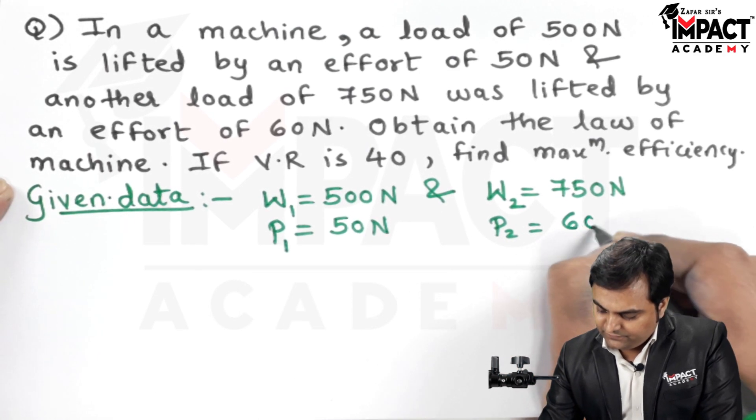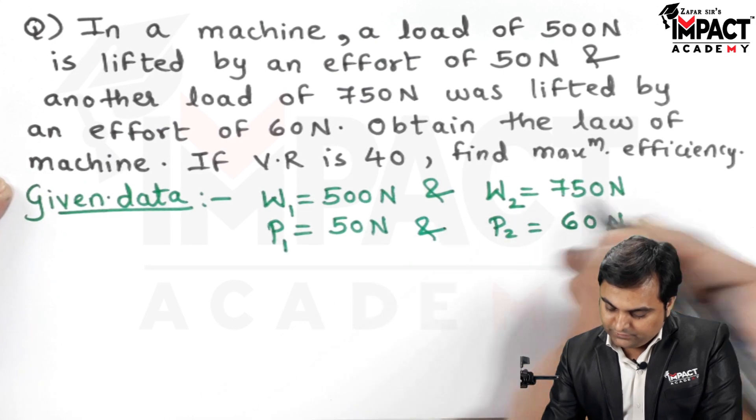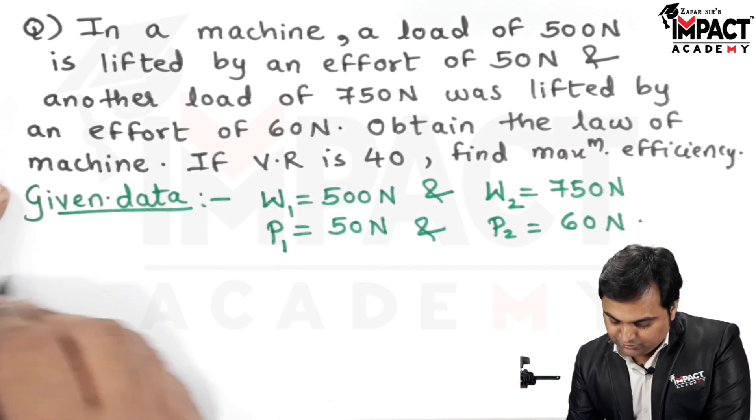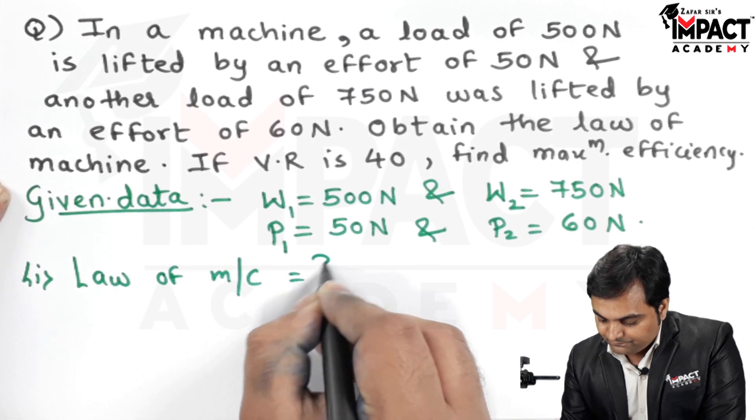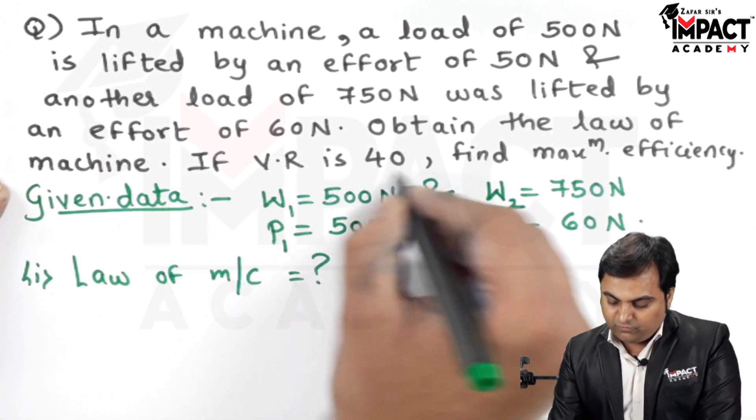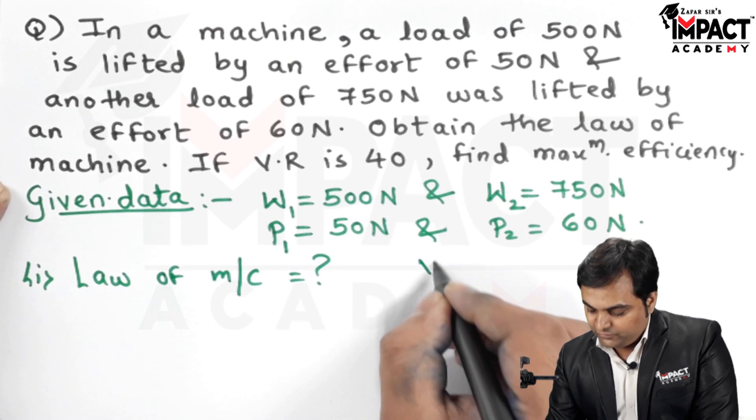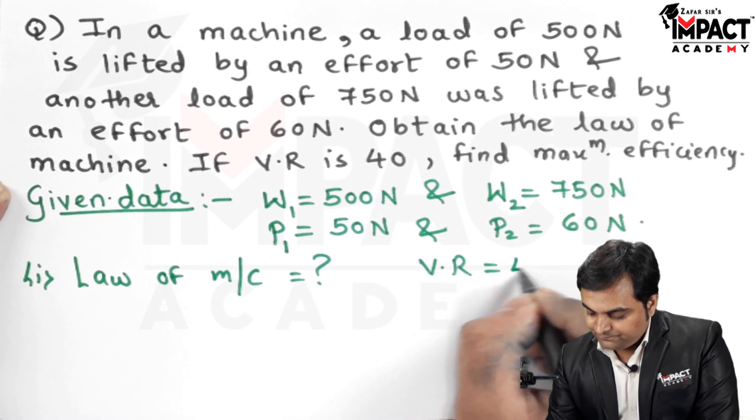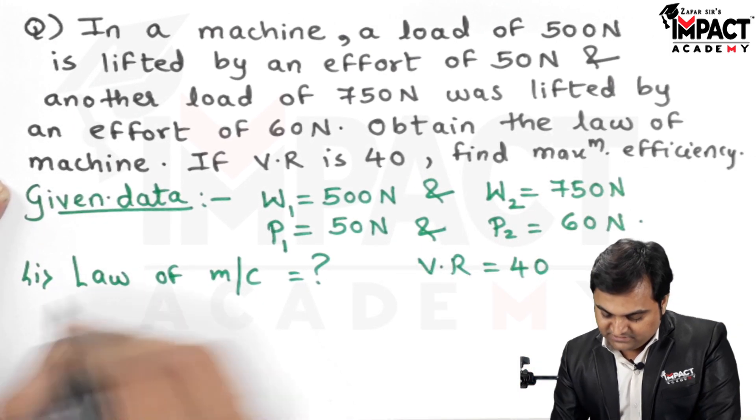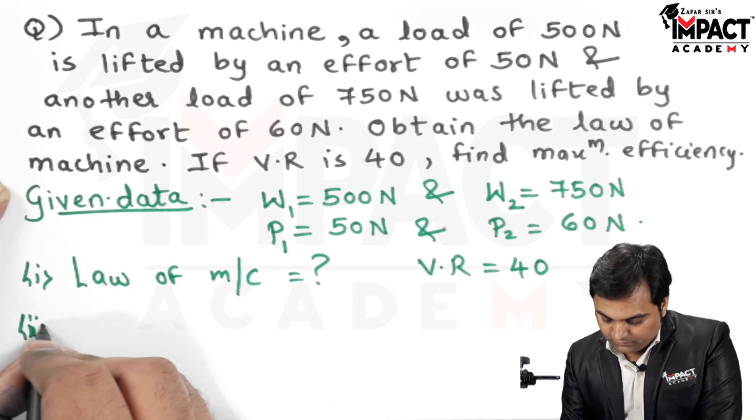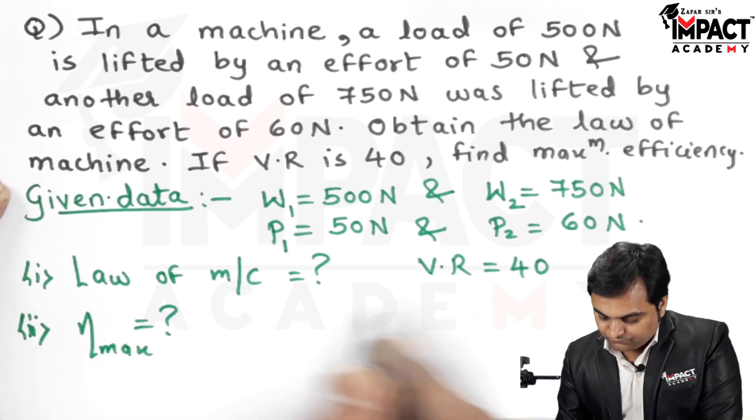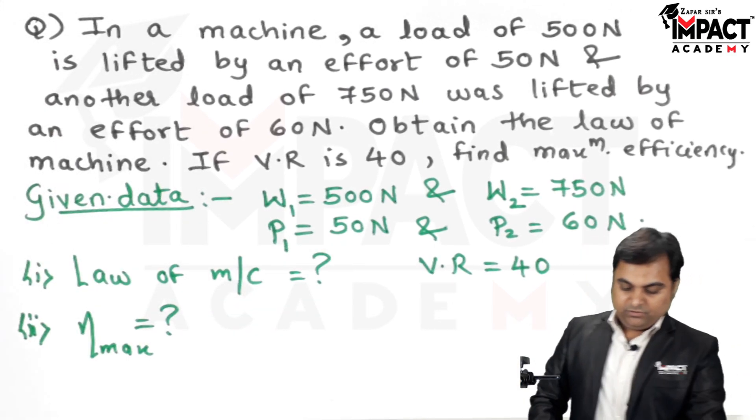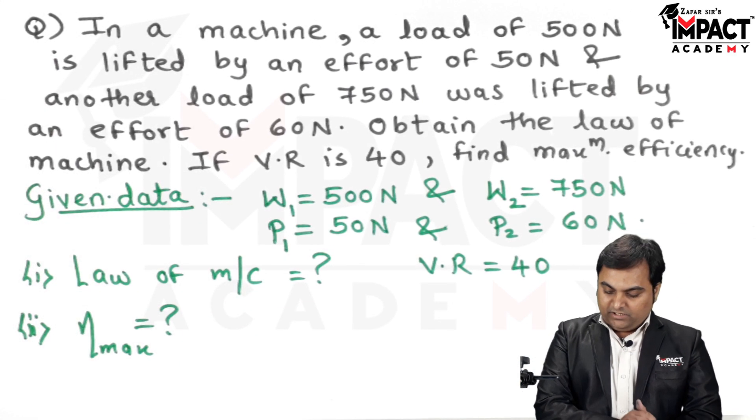Obtain the law of machine. If VR is 40, that is the velocity ratio is given as 40, find the maximum efficiency. We have to calculate the maximum efficiency for the given machine. Now this is the data in front of us.